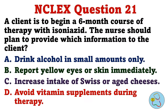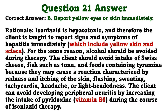A client is to begin a six-month course of therapy with isoniazid. The nurse should plan to provide which information to the client? A. Drink alcohol in small amounts only. B. Report yellow eyes or skin immediately. C. Increase intake of Swiss or aged cheeses. D. Avoid vitamin supplements during therapy. The correct answer is B: report yellow eyes or skin immediately. Isoniazid is hepatotoxic and therefore the client is taught to report signs and symptoms of hepatitis immediately. For the same reason, alcohol should be avoided during therapy. The client should avoid intake of Swiss cheese, fish such as tuna, and foods containing tyramine, because they may cause a reaction characterized by redness, itching of the skin, flushing, sweating, tachycardia, headache, or lightheadedness. The client can avoid developing peripheral neuritis by increasing the intake of pyridoxine during the course of isoniazid therapy.